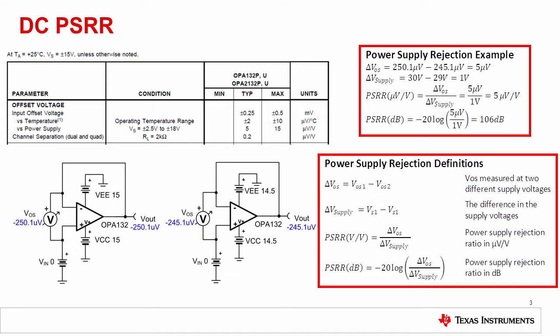This slide shows a simulation and calculation where the power supply is reduced by 1 volt. Note that the positive and negative supplies are both shifted equally by 0.5 volts. In the next slide, we will see the implications behind making symmetrical and asymmetrical changes in the power supply.